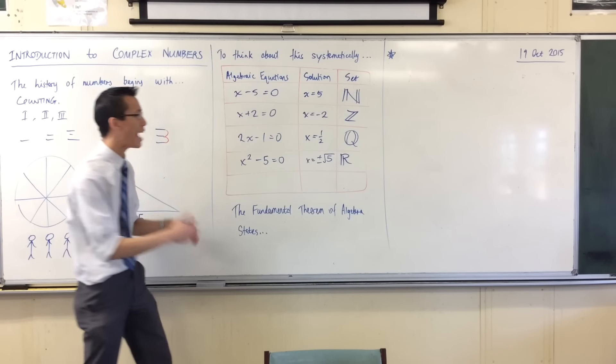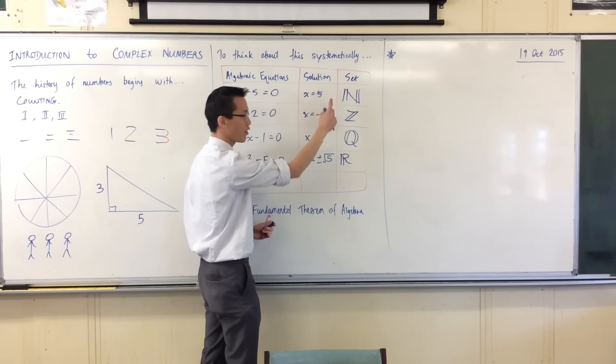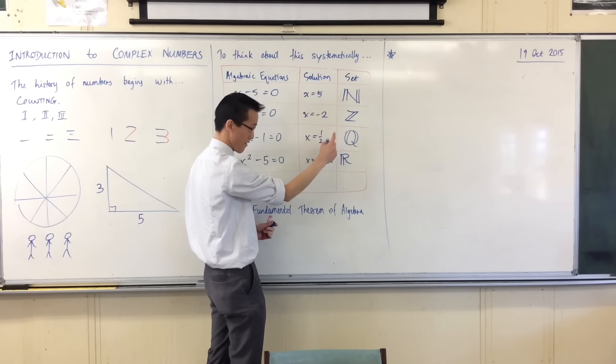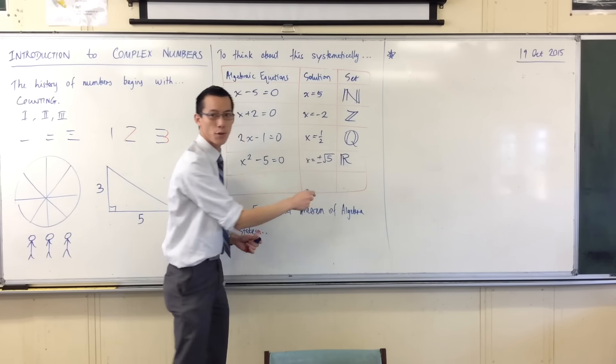What kind of equation could I craft that would get me out of not only the natural numbers, not only the integers, not only the rational numbers, even out of the real numbers.